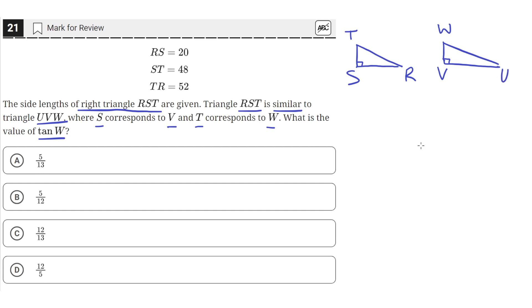So we need to find the tangent of angle W. Now, we're not given the value of angle W or any of the sides. So we're going to have to use the fact that triangle UVW is similar to triangle RST.